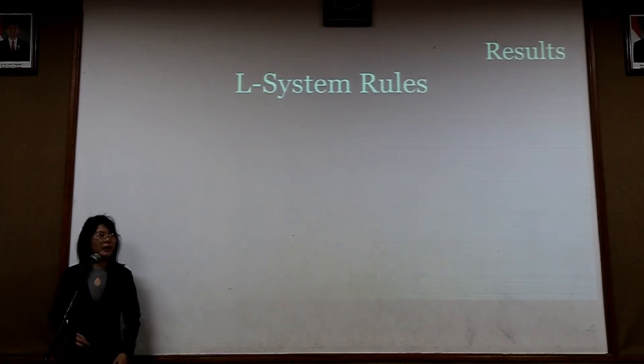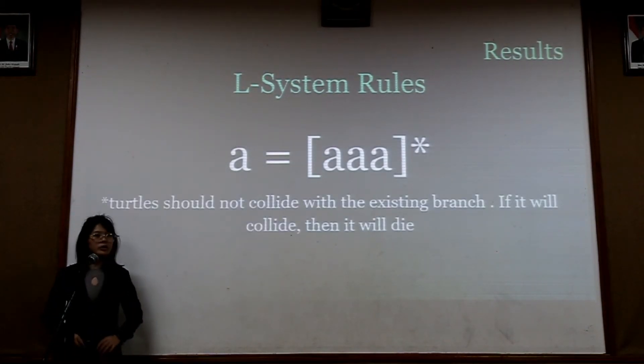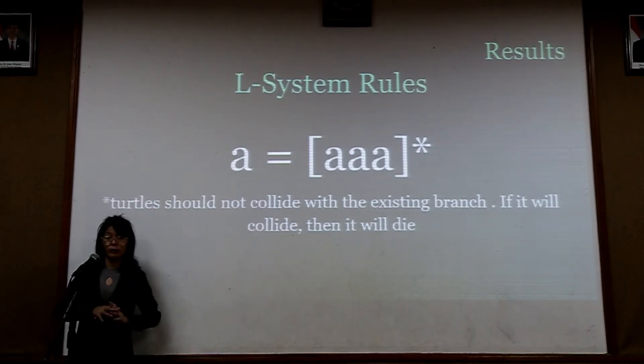And the L-system rules for the tree of life is A equals AAA. But turtles should not collide with the existing branch. If it will collide, then it will die.